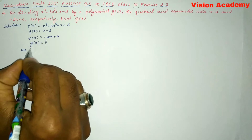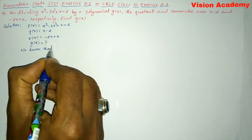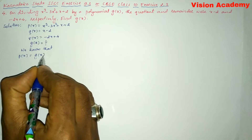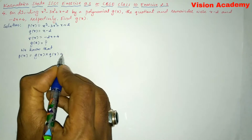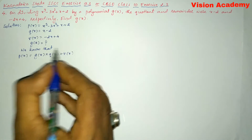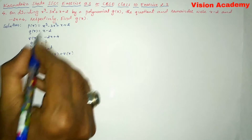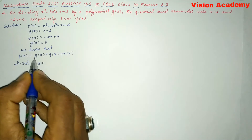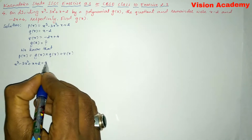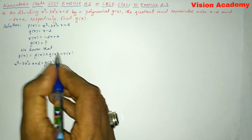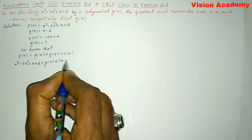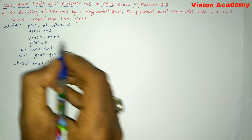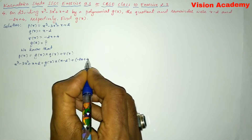Here we will write that P(x) is equal to g(x) into the quotient q(x) plus the remainder r(x). So P(x), which is x³ minus 3x² plus x plus 2, is equal to g(x) — to be determined — into q(x), which is x minus 2, plus r(x), which is minus 2x plus 4.